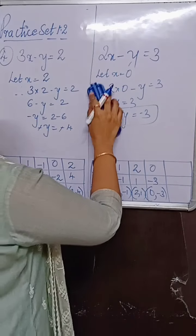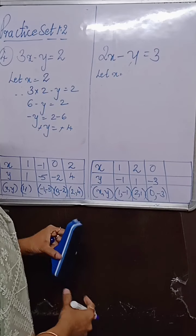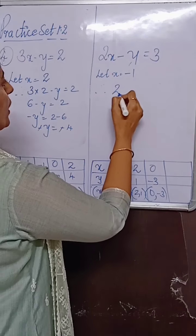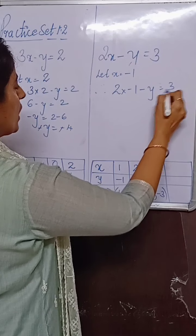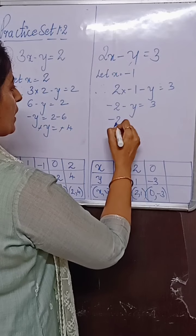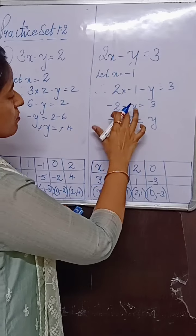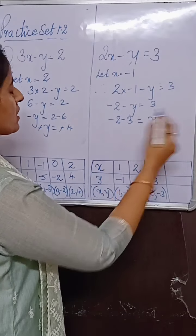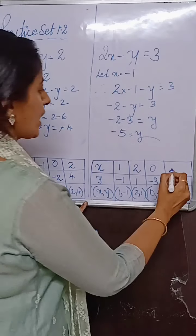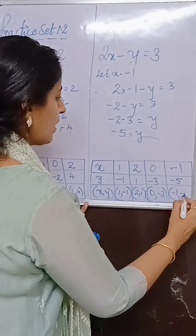For the fourth ordered pair, I will take x as minus 1. So 2 into minus 1 minus y equals 3, giving minus 2 minus y equals 3, so minus 2 minus 3 equals y. The minus y moves over and becomes plus, giving us y equals minus 5. When x is minus 1, y is minus 5. Ordered pair: minus 1 comma minus 5.